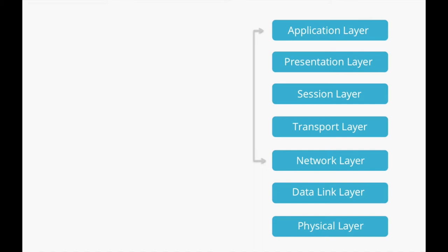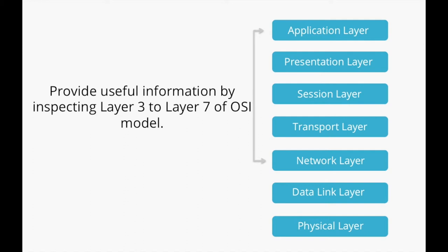Let's see how Deep Packet Inspection collects the data. As we can see in the seven layers of the OSI model, Deep Packet Inspection inspects and gets information from Layer 3 to Layer 7. From Layer 3, the network layer, we get IP address details like source, destination, and conversation details. From the transport layer we get port, protocol, and response times — both network response time and application response time. From the application layer we get the URL details that are accessed over the network.